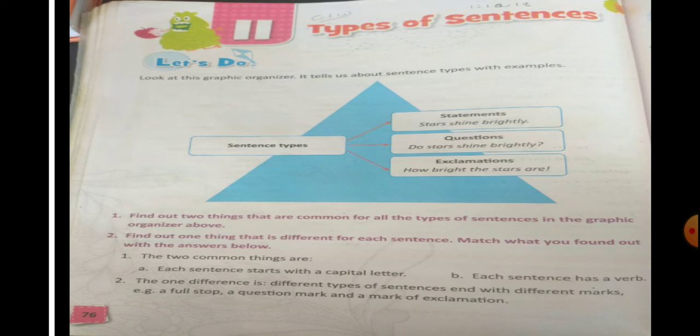The next common thing is that each sentence has a verb. So which is the verb in all three sentences? It is 'shine.' The stars shine brightly. Do the stars shine brightly? And how bright the stars are. So in all three sentences we have got the verb, which expresses the work that has been done. So these are the two things in common.